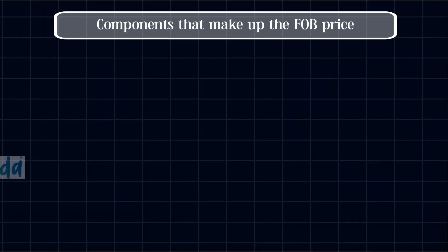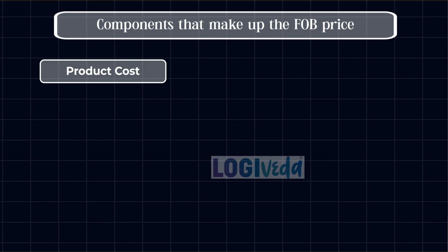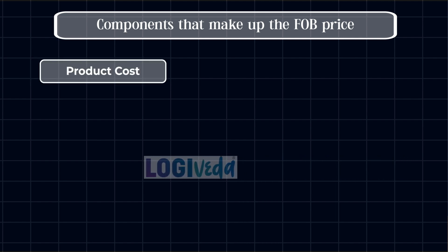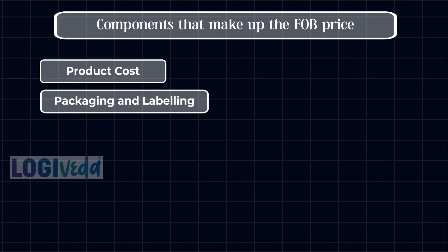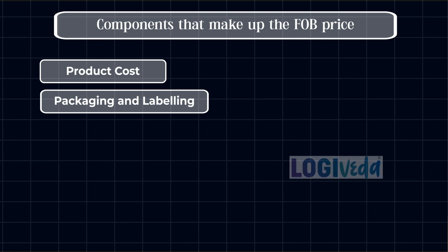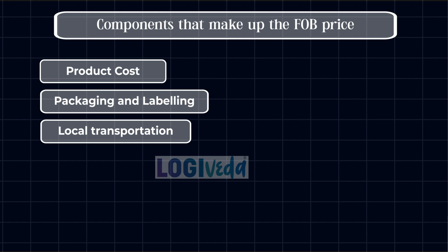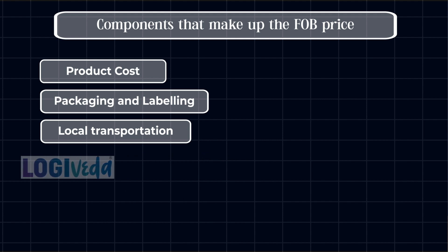FOB price consists of a lot of components. Let's break down the components that make up the FOB price. First is product cost — this is the cost of the product itself. Then we have packaging and labeling — the expense of packaging and labeling the goods. Then we have local transportation — the cost to move goods to the departure port.